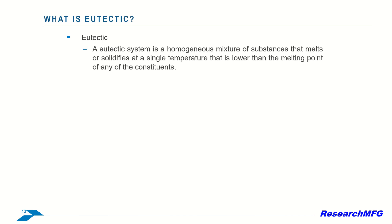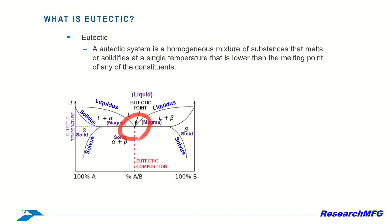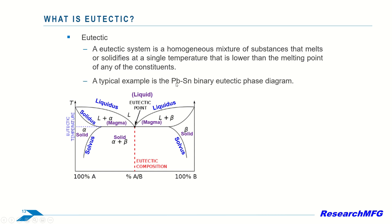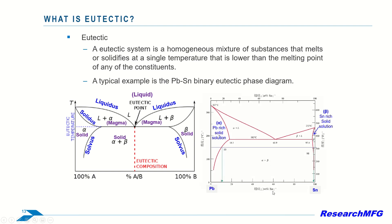Eutectic systems are homogeneous mixtures that solidify or melt at a single temperature lower than any constituent's melting point. This temperature is the eutectic temperature — it's the lowest temperature at which all components melt simultaneously. In cooling, non-eutectic mixtures solidify component by component until all material is solid. A classic instance is the lead-tin binary eutectic phase diagram. If you're intrigued by this subject, you can explore more information by searching online.